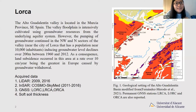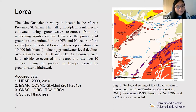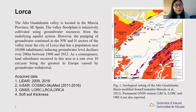This is my study area in Lorca, in the southeast of Spain. Land subsidence occurred in Lorca at a rate of 10 cm per year, being the greatest in Europe, caused by groundwater withdrawal. Here we have four kinds of data: LIDAR, InSAR, GNSS, and soft soil thickness.